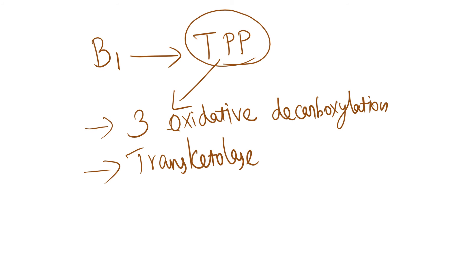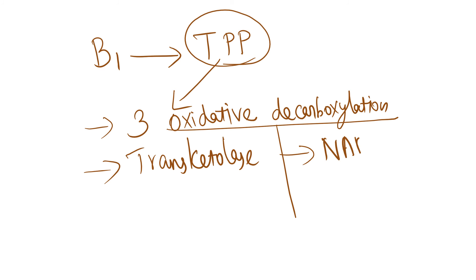What is meant by oxidative decarboxylation? Oxidation is loss of electrons, so there should be someone to accept those electrons — it is NAD or NADH. In the case of thiamine pyrophosphate-catalyzed reactions, NAD+ is the acceptor of electrons, so it produces NADH.